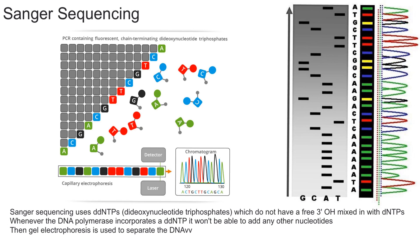One key thing for Sanger sequencing is that they use broken forms of DNTPs called DDNTPs, which stands for dideoxynucleotide triphosphates. This might sound like a really complex name, but essentially if you remember the structure of a nucleic acid, it has a three prime OH group on it. This three prime OH group is really important because DNA polymerase needs that free three prime OH group to add more nucleotides onto the strand of DNA.